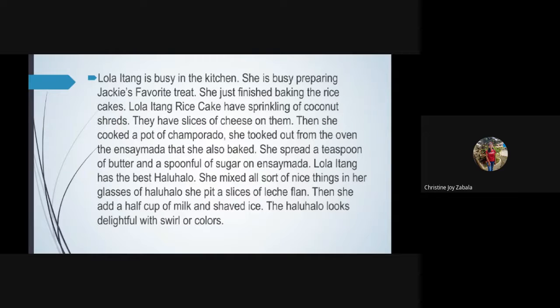Lola Itang is busy in the kitchen preparing Jackie's favorite treat. She just finished baking the rice cake. Lola Itang's rice cakes have a sprinkle of coconut bread and slices of cheese on them. Then she took a pot of champorado. She took out from the oven the ensaymada that she also baked and spread a teaspoon of butter and a spoonful of sugar on it. Lola Itang has the best halo-halo. She mixes all sorts of nice things in her glasses of halo-halo. She puts slices of leche flan, then she adds a half cup of milk and shaved ice. The halo-halo looks delightful with lots of colors.